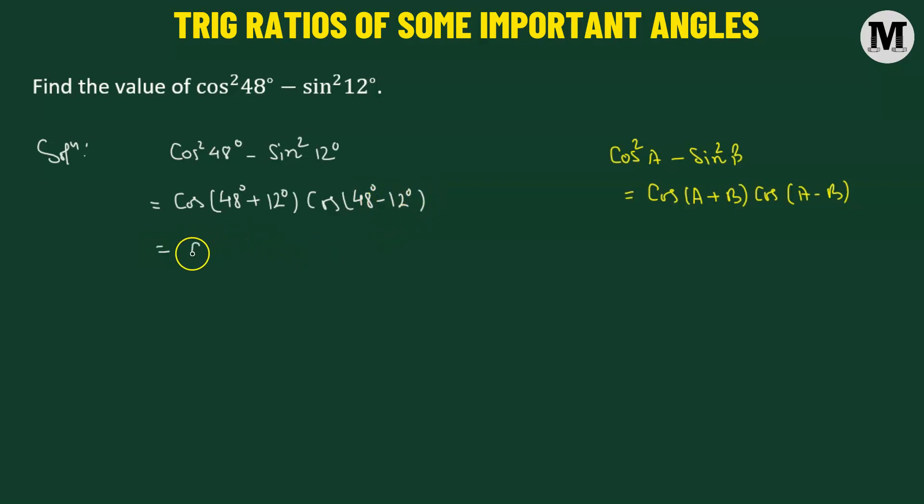We will now get cosine of, so 48 plus 12, that's 60 degree. Now that's a standard value multiplied to cosine of 48 minus 12. So that's 36 degree. And this is also a standard value.